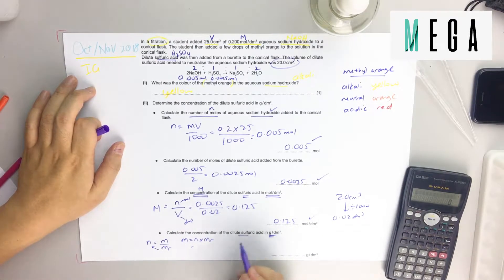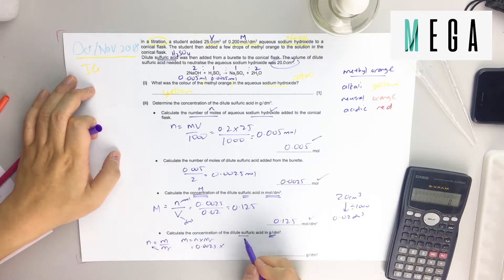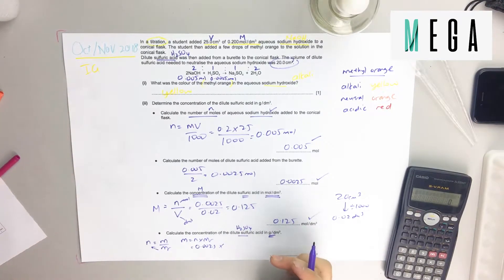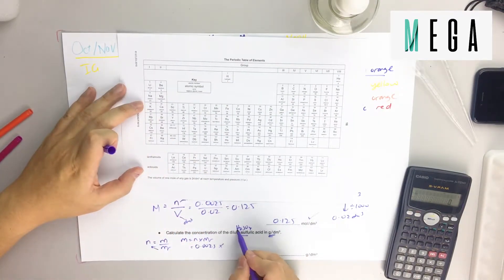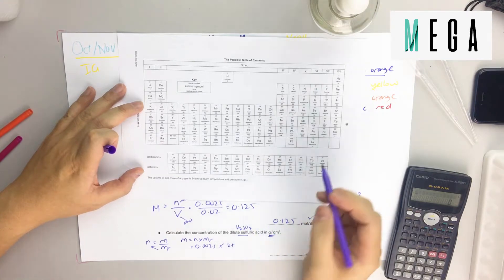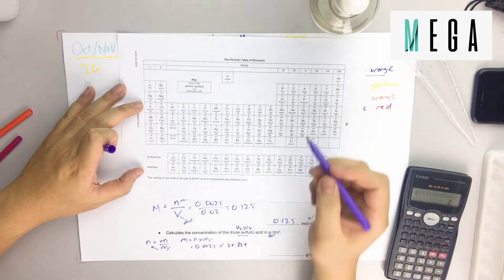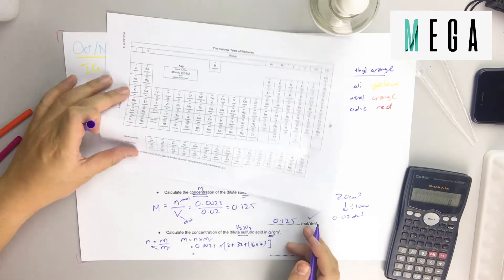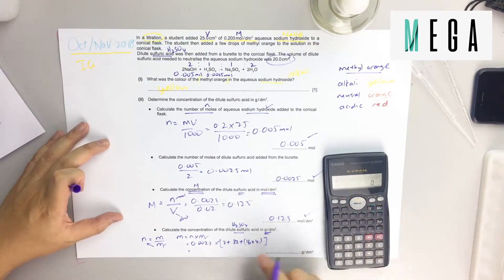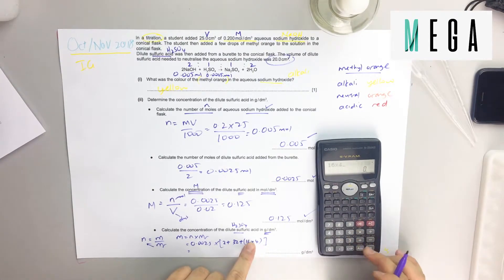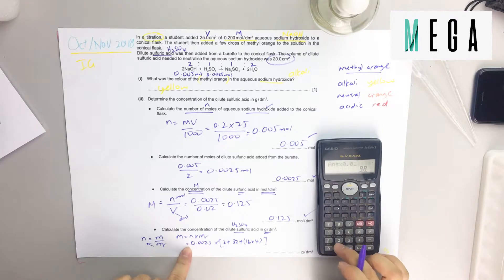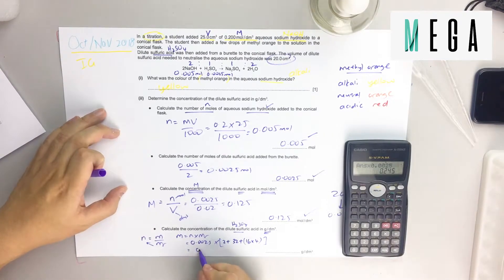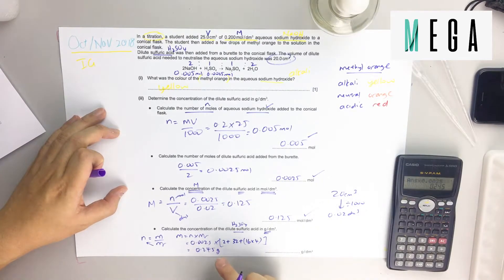For sulfuric acid, the number of moles is 0.0025. Molar mass of sulfuric acid H2SO4, use the periodic table. H2 is 2, S is 32, oxygen is 16, four of it. In the calculator, times 16 times 4, plus 32, plus 2. It's more convenient before we times the number of moles. You get 0.245 gram.